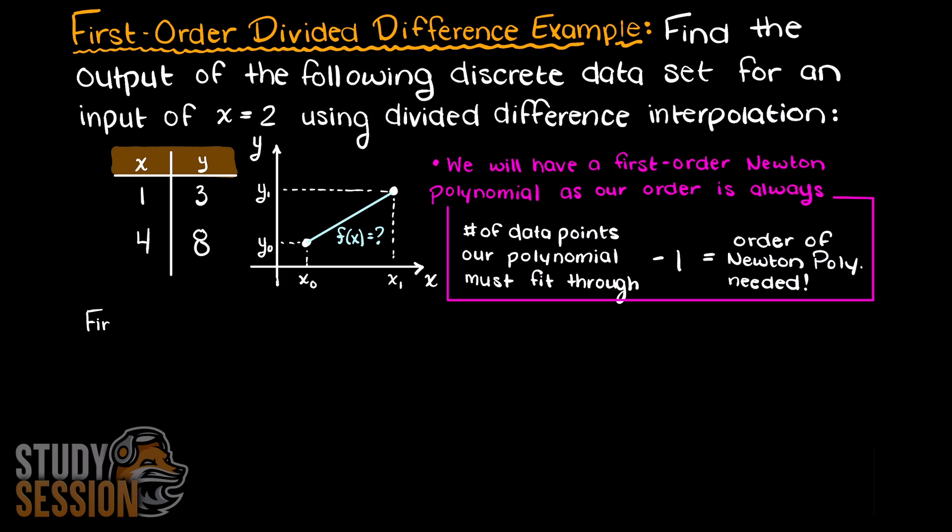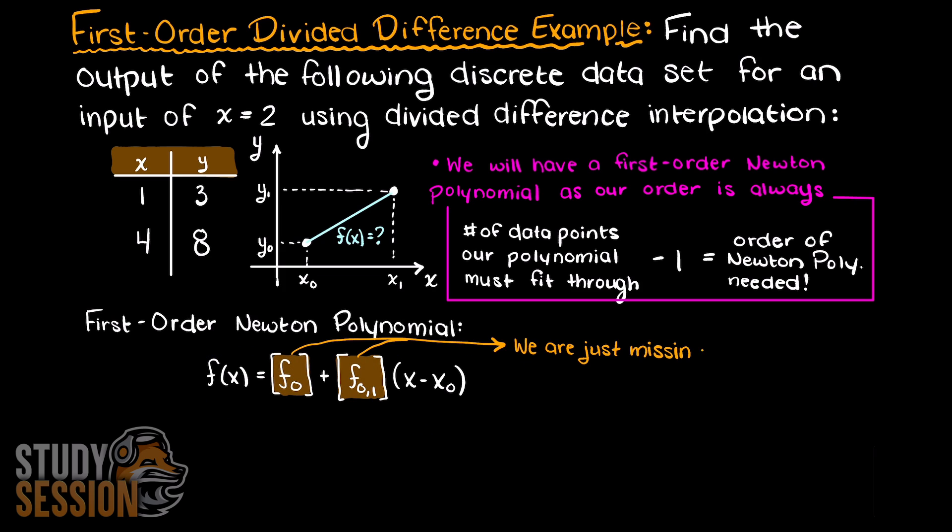A first order Newton's polynomial has the following general equation. As you can see, we are only missing these coefficients here and these are called our divided differences, hence the name. But how do we find these coefficients for our Newton polynomial? Well that is the magic of this method, we can simply use our divided difference table.